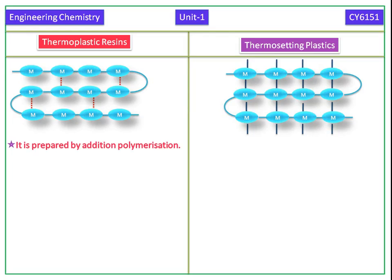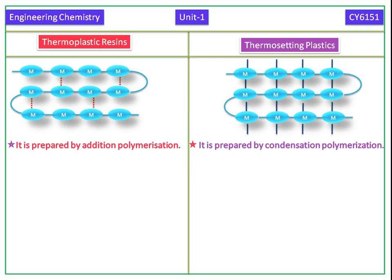Thermoplastic resins are prepared by addition polymerization. Thermosetting plastics are prepared by condensation polymerization.